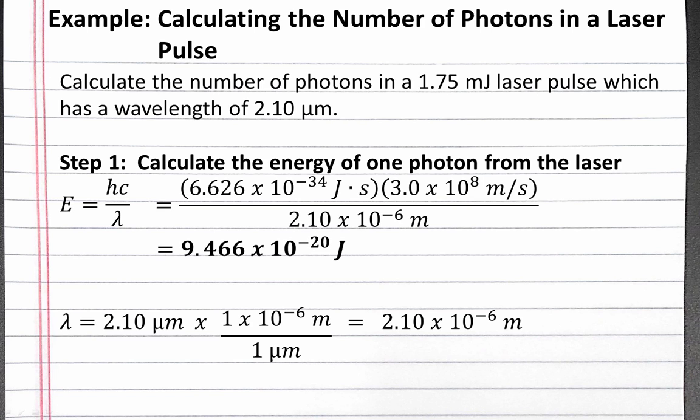Completing this calculation, we should get that the energy of one photon is 9.466 times 10 to the negative 20th joules.